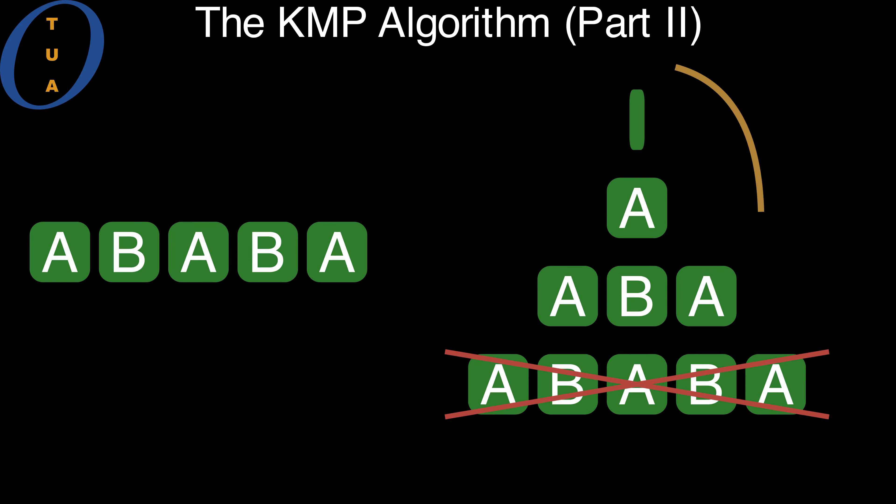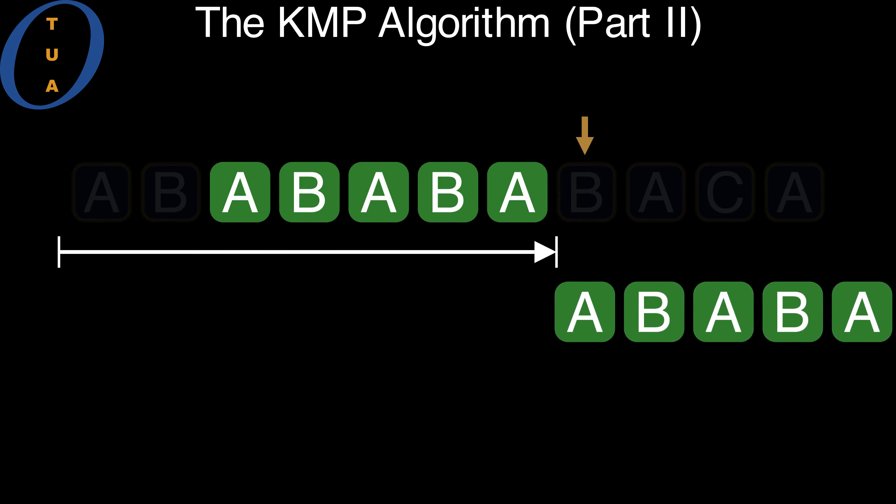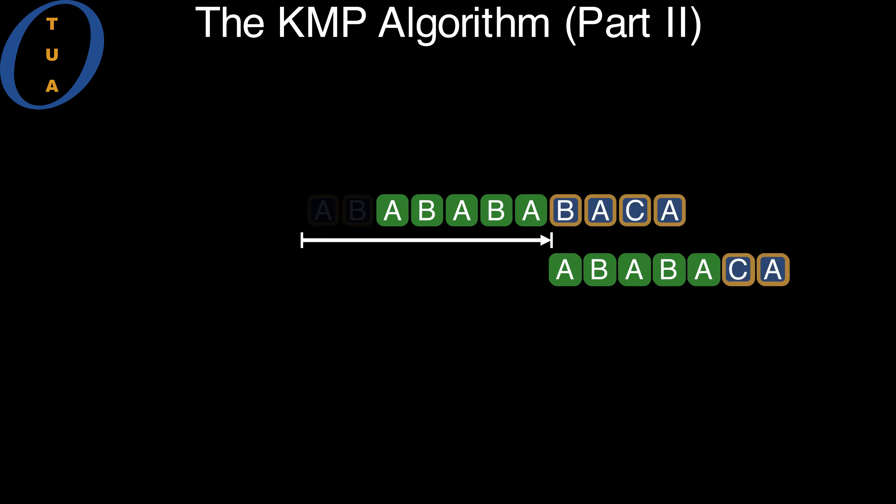Instead, we have to use one of the other borders, which are called proper borders. If we get greedy and shift too far to the right, we could be missing a match, which is never good.